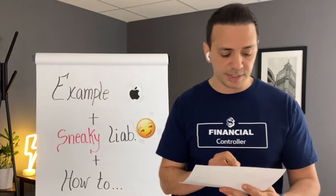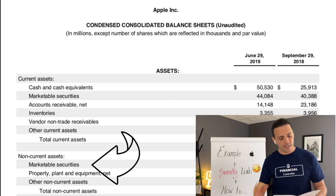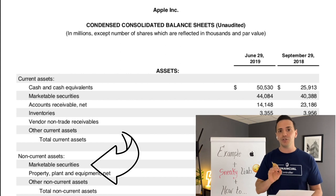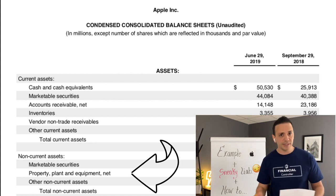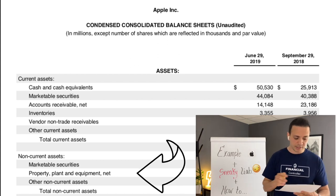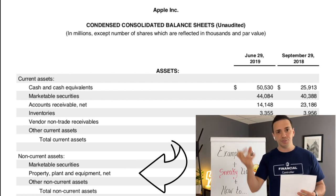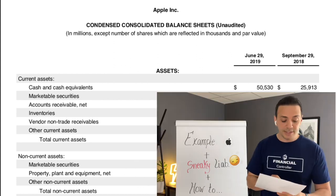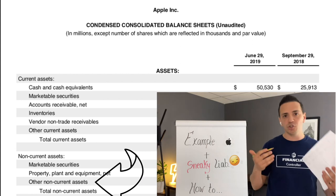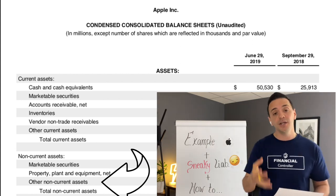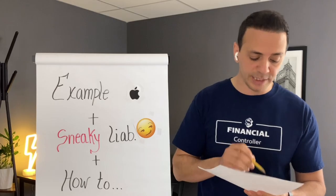Let's look at non-current assets. The first item is marketable securities — most likely securities not convertible to cash within 12 months, taking longer than a year, possibly because the company has a contract that cannot be broken before 12 months. Then you have property, plant, and equipment — self-explanatory: any property and equipment the company owns, presented net of accumulated depreciation. Then there are other non-current assets including intangibles — things you cannot touch, such as patents, goodwill, and intangible assets like cryptocurrency, which sits here under GAAP.